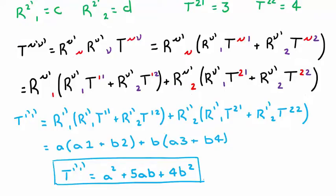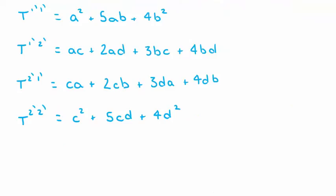We can use a nearly identical procedure to find the other three components. I won't write them all out explicitly, but you should have gotten the following answers. Finally, we can write the representation in the transformed coordinate system as follows.